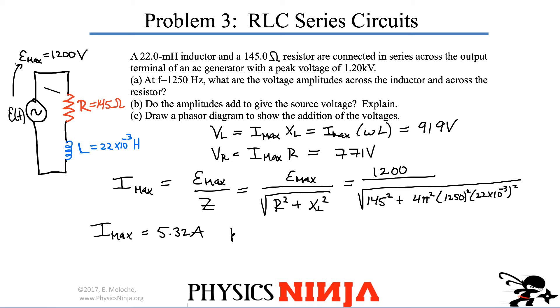It becomes immediately clear for question B. Do the amplitudes add to give the source voltage? The source voltage is Emax, which equals 1200. You can see right away that this does not equal VR plus VL. And the reason they don't add together again is because the voltages are not in phase with each other.